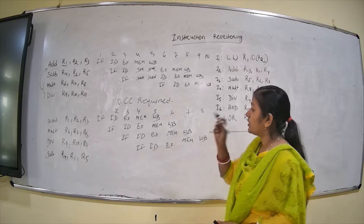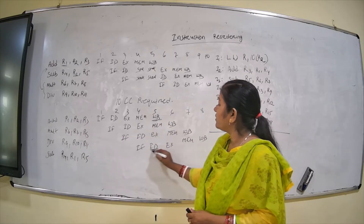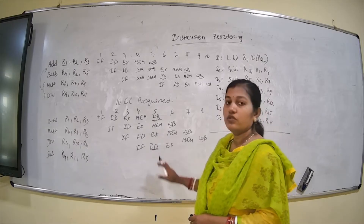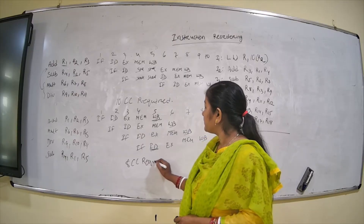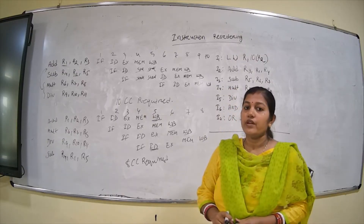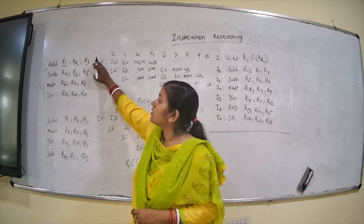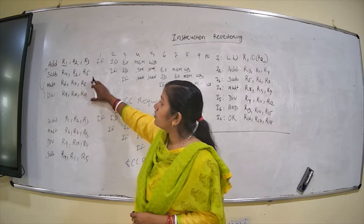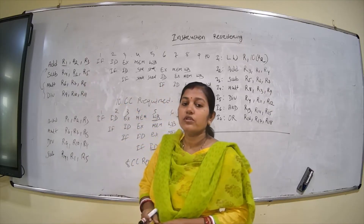Here we are producing the value of R1, and here we are reading the value of R1 at the fifth clock cycle, so there is no stall. How many clock cycles are required? 8 clock cycles are required. So by placing 2 independent instructions between the dependent instructions, we can remove the stall.